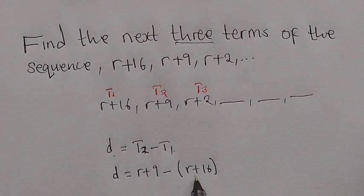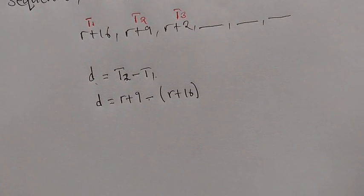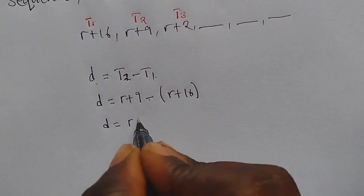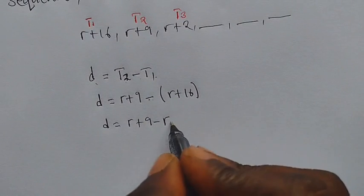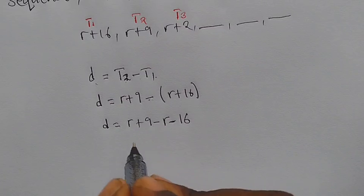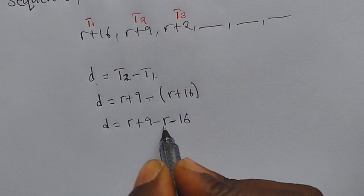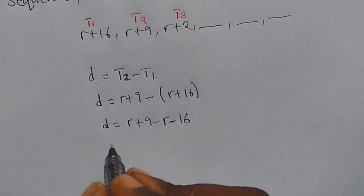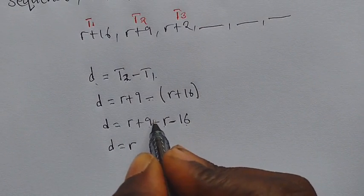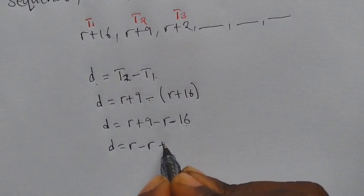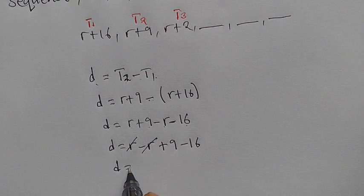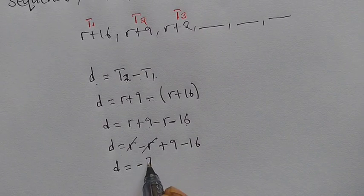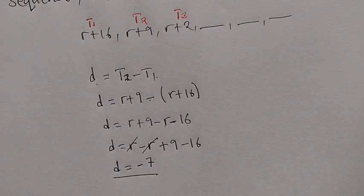We enclose the second part in brackets because it will be affected by the negative. Opening the brackets: D equals R plus 9, then negative R, negative 16. Collecting like terms — R and negative R cancel — giving D equals 9 minus 16, which is negative 7. So our common difference is negative 7.